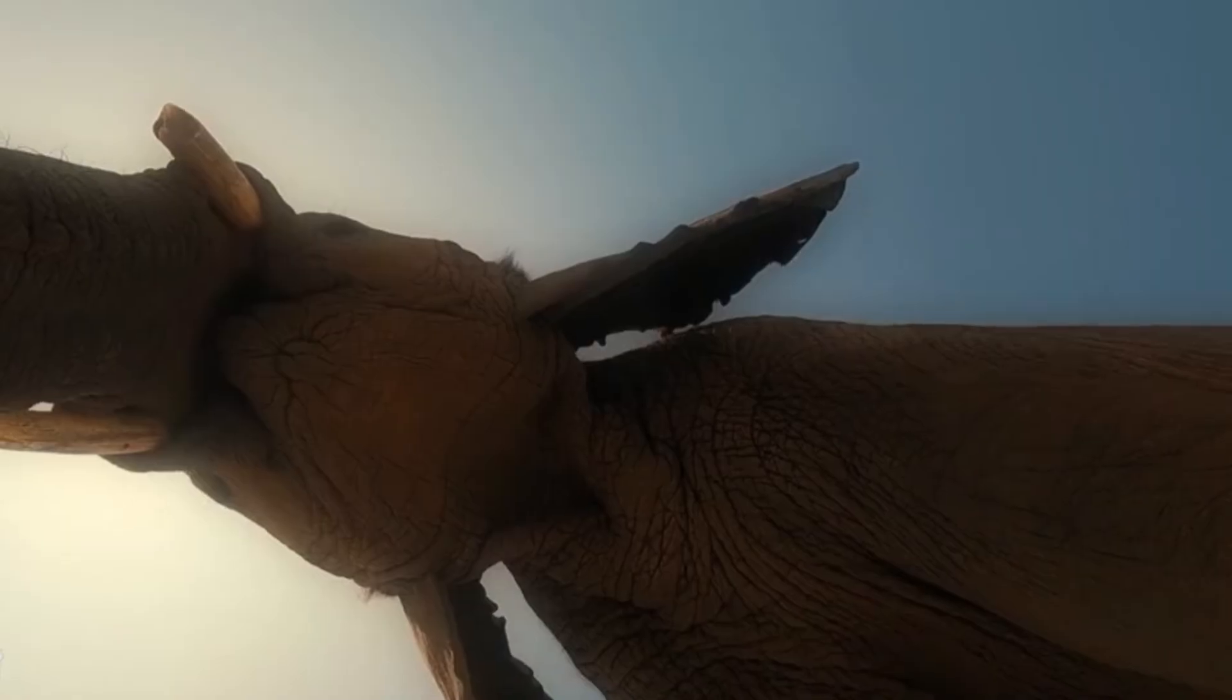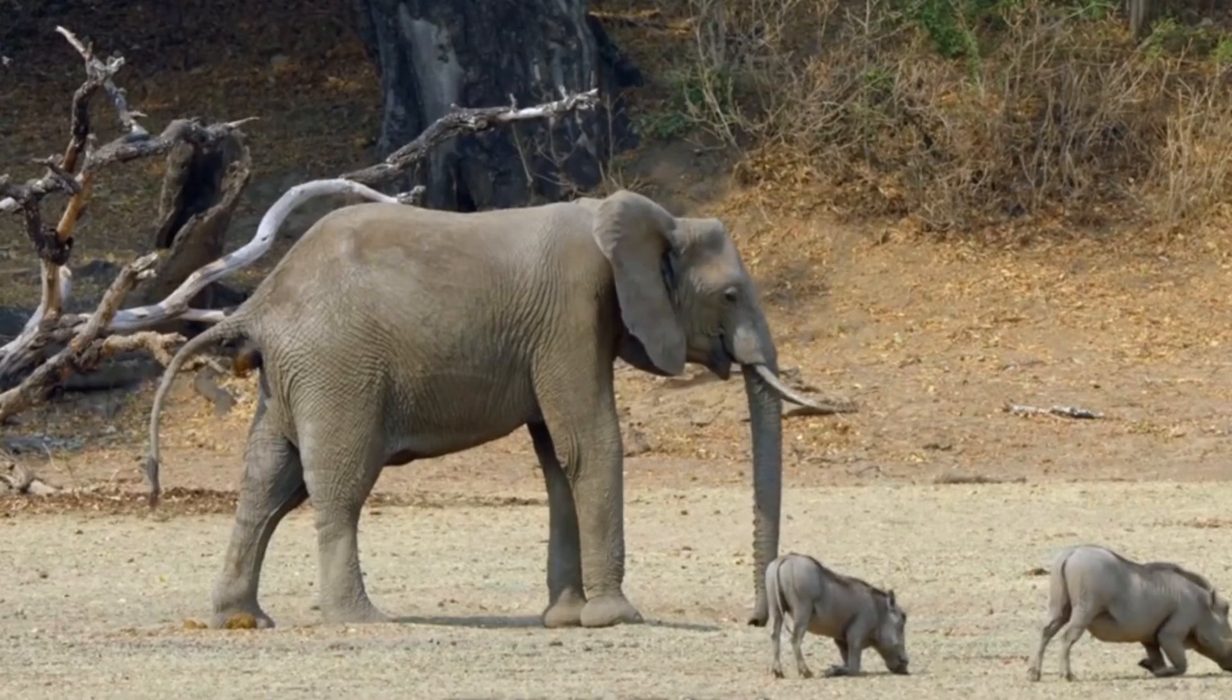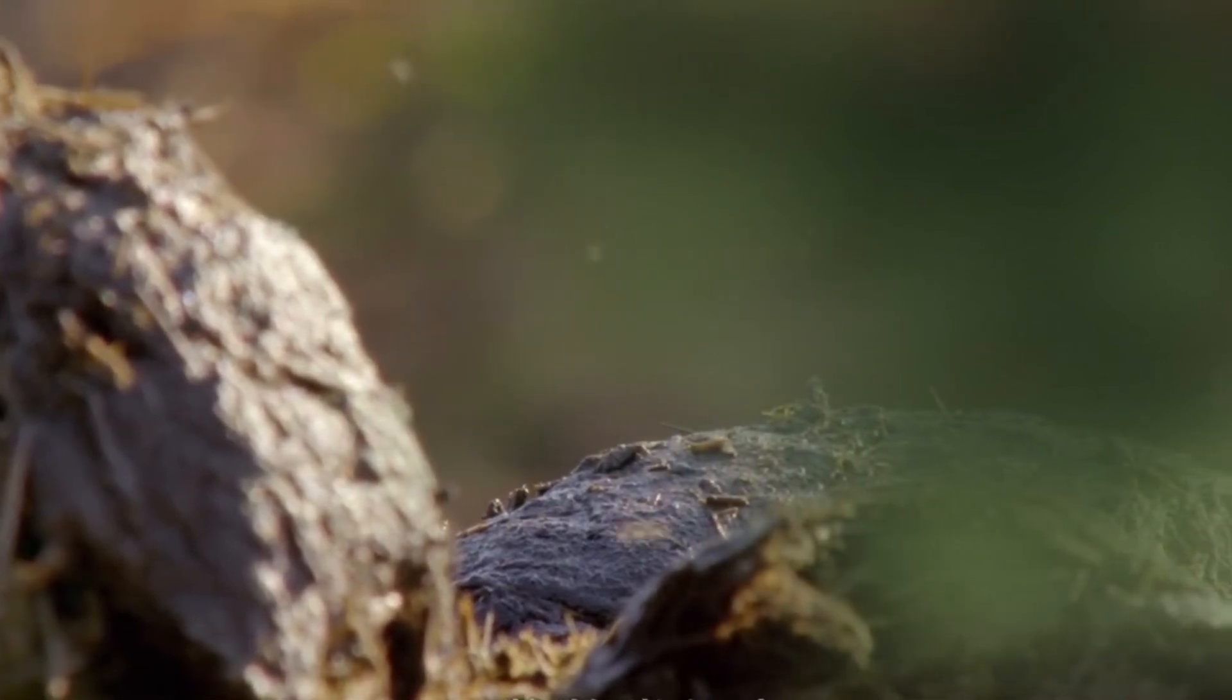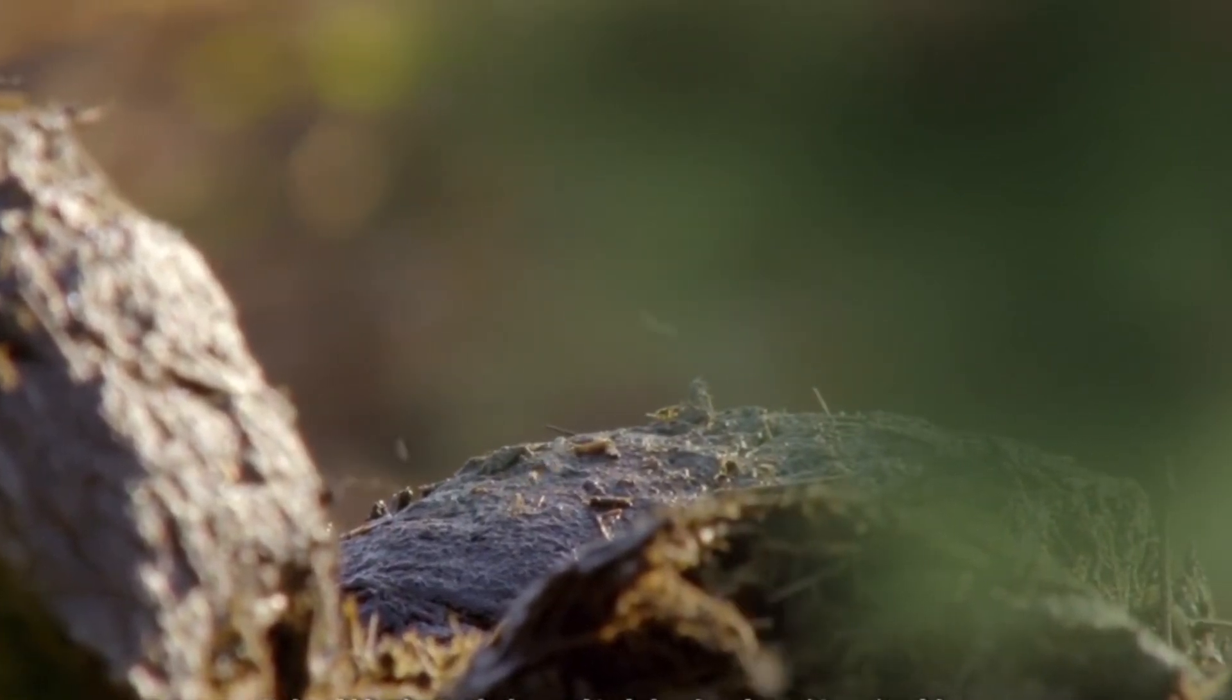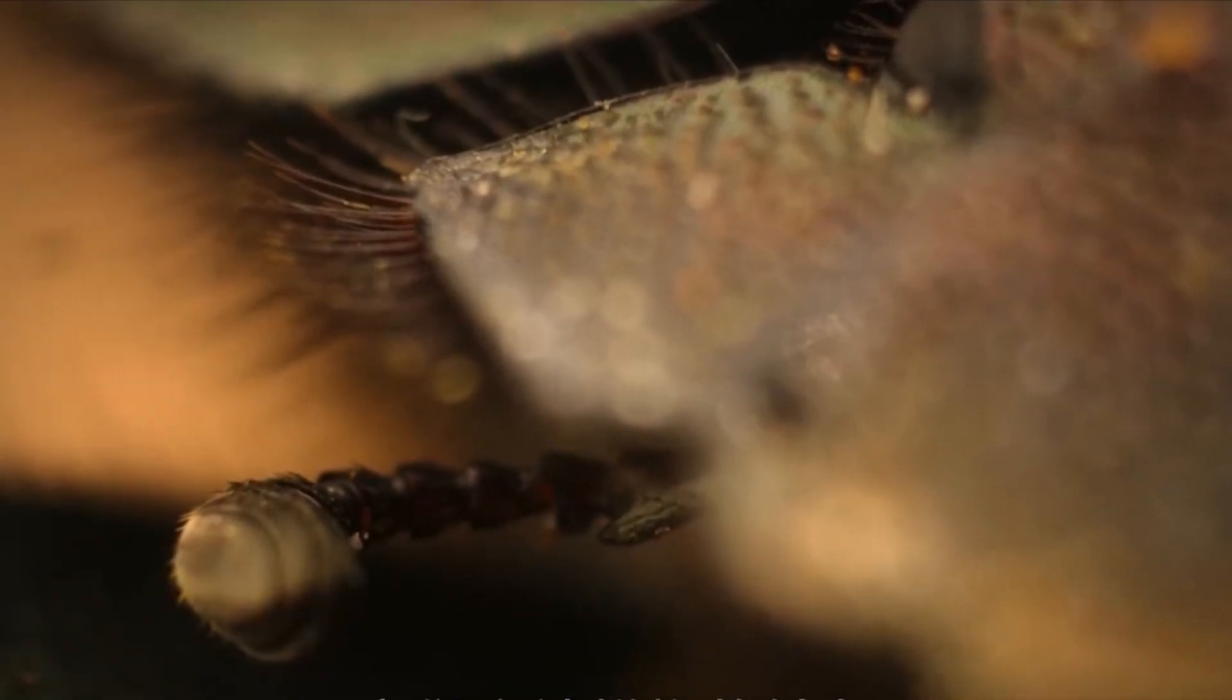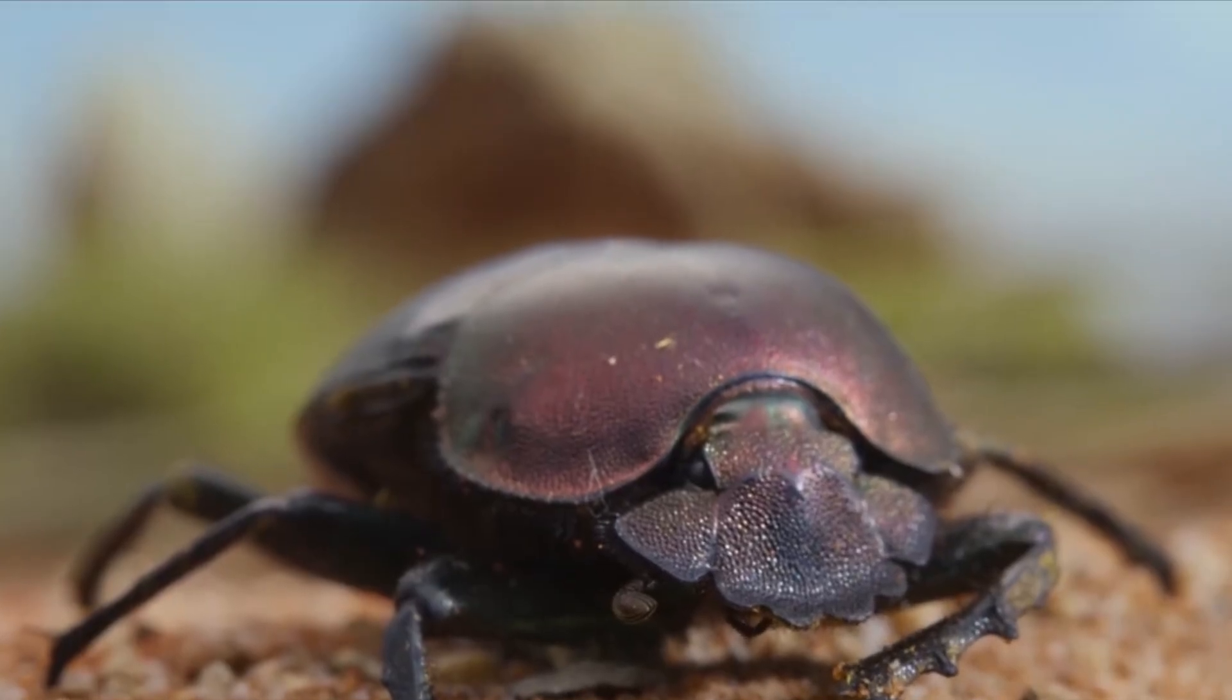Elephants, for example, defecate almost every hour with massive quantities left behind each time. Animal faeces naturally contain various volatile organic compounds, which the dung beetle can detect and identify with remarkable precision using its antenna.